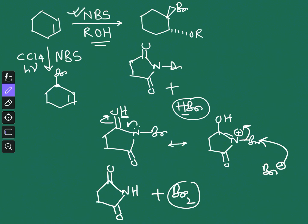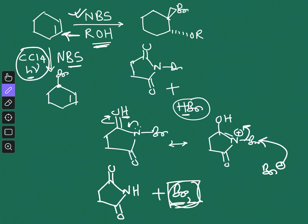When you add a stoichiometric amount of NBS in polar solvents like water or ROH, you generate a lot of Br2, and that does simple electrophilic addition to the double bond. But when you use a tiny amount of NBS in a CCl4-like solvent with a radical initiator or sunlight, the bromine reacts via a radical pathway and allylic bromination occurs.